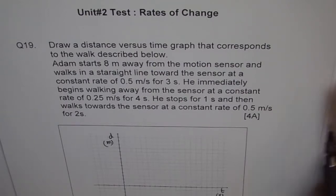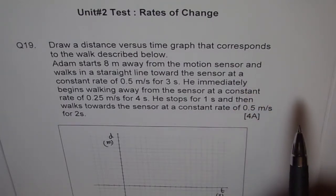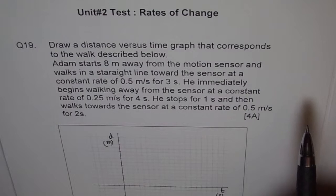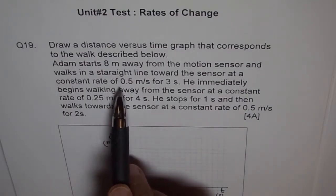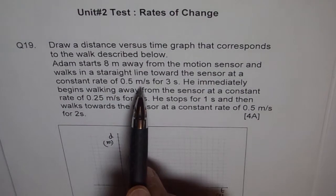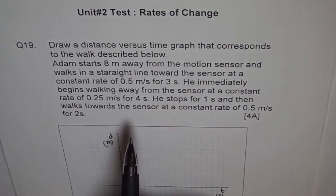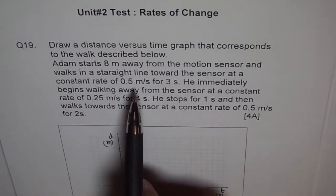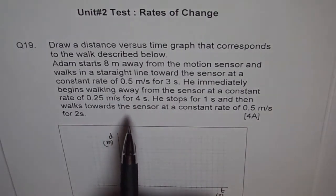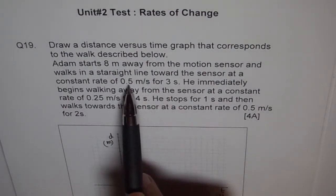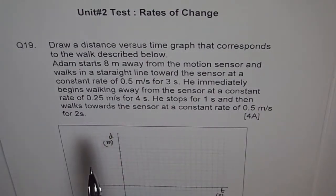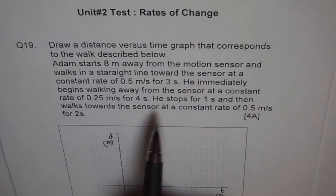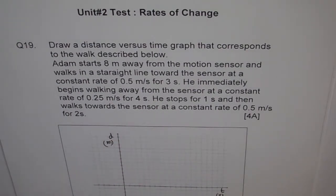Second, we have been given the rate at which the person walks. So if the rate is 0.5 meters per second for 3 seconds, then the distance is speed times time. So 0.5 times 3 will give us 1.5 meters. So that is how we have to look into it and then do the problem. So let's start.